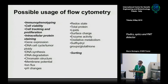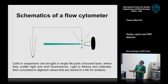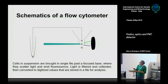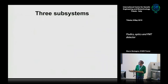The basic schematic of a flow cytometer is as follows: a tube containing the samples in suspension is brought by the fluidic system to the interrogation point, where cells intercept a laser beam. They scatter light or produce fluorescence that is detected by a detector and converted to digitized values that are stored and can be analyzed. A flow cytometer is therefore divided into three subsystems: fluidics, optics, and electronics.